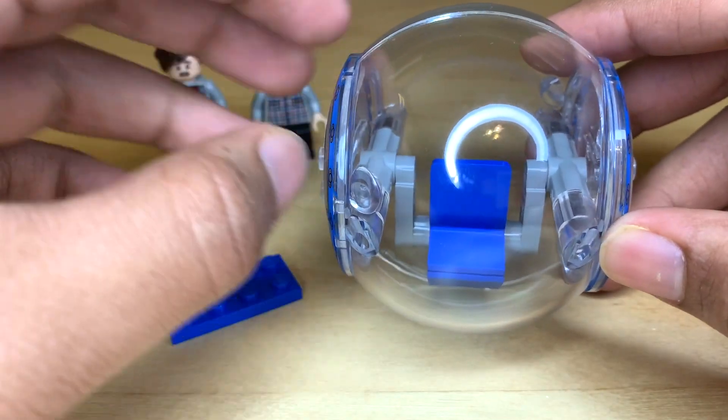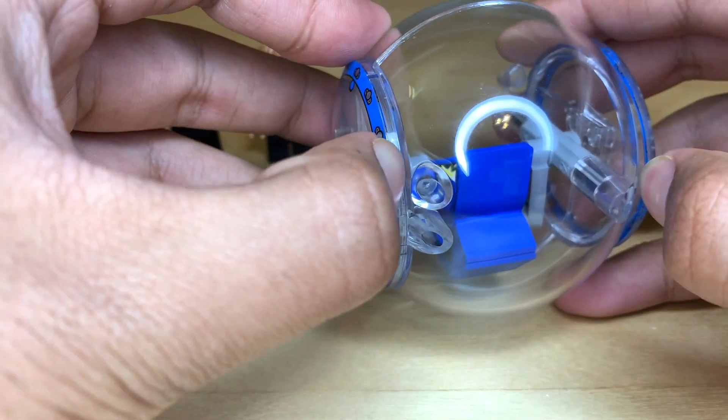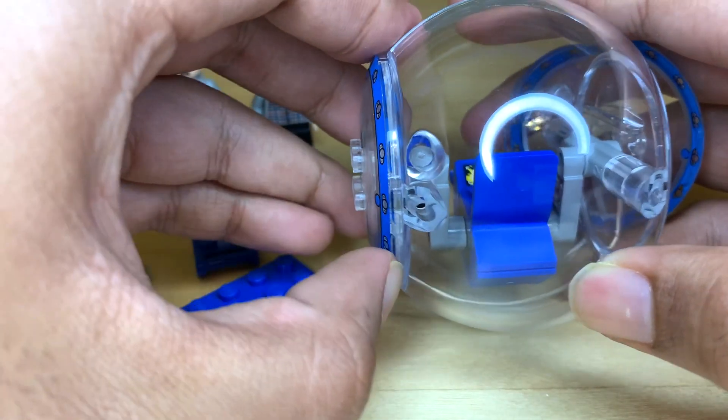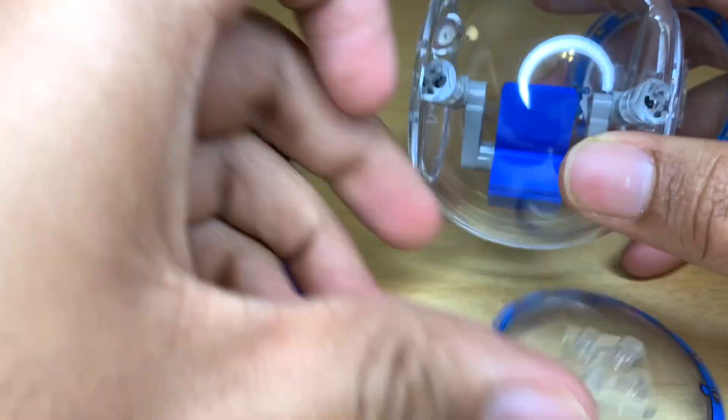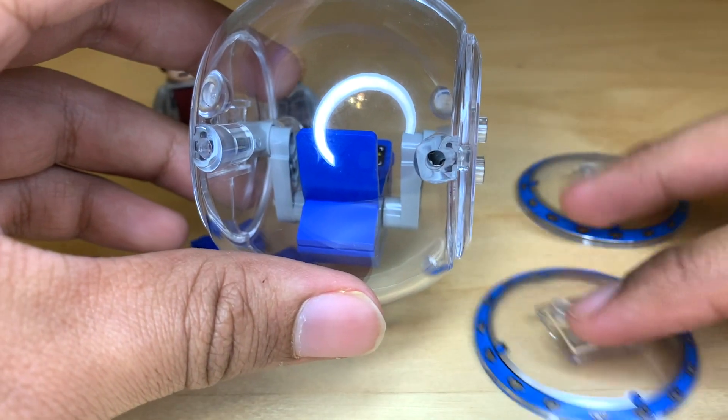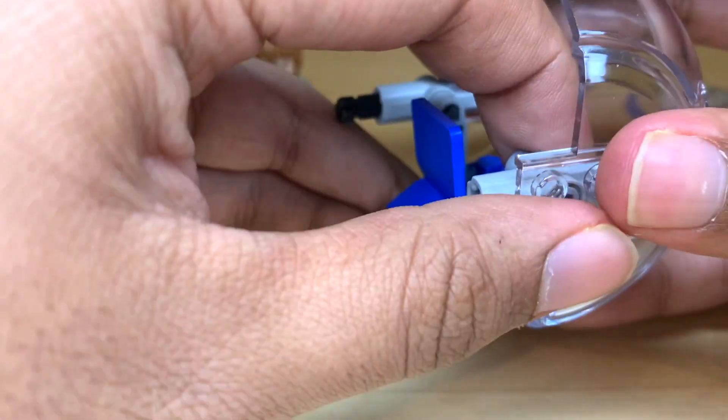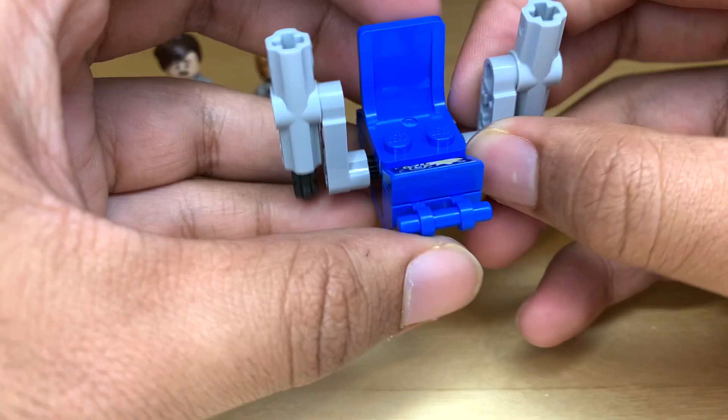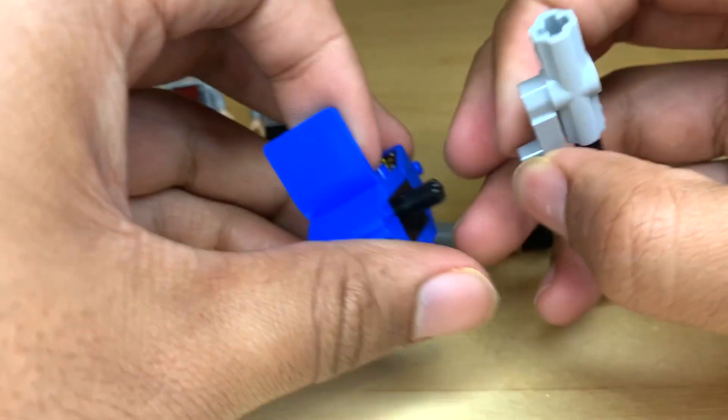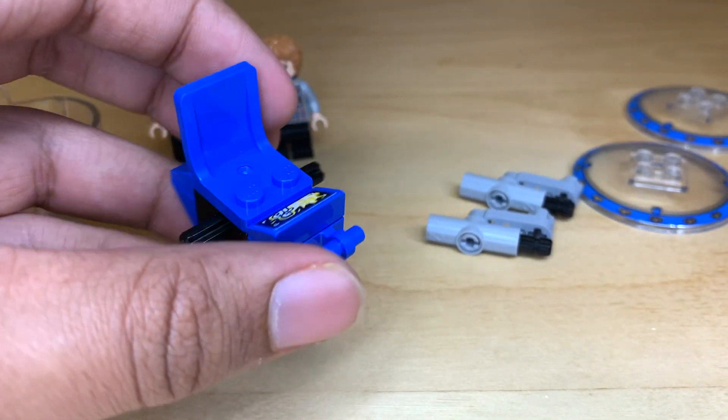So we're going to go ahead and grab our gyrosphere, and I want to apologize because you can see my ring light and my ceiling fan and everything in the reflection, but it's kind of hard to avoid that. So you can get into this by just pulling apart your sphere halves, and then go ahead and fully remove this and just take off these little Technic pieces from the side of the chair assembly.